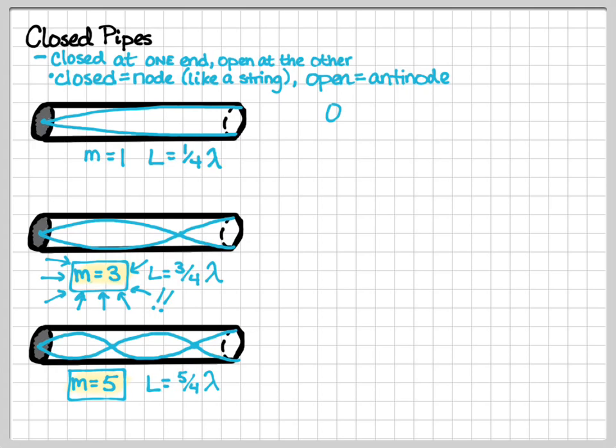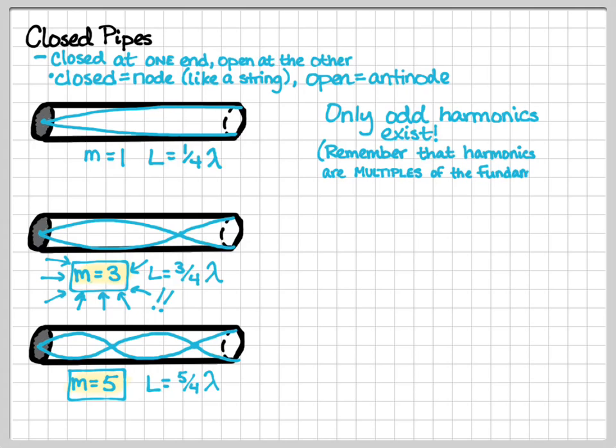For a closed pipe, only the odd harmonics exist. The even ones just don't work out, because the geometry is asymmetric. Harmonics are always multiples of the fundamentals, so we have one-fourth lambda, three-fourths lambda, five-fourths lambda. So we've got harmonics one, three, and five drawn here.